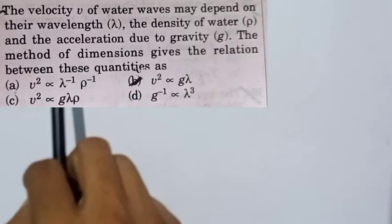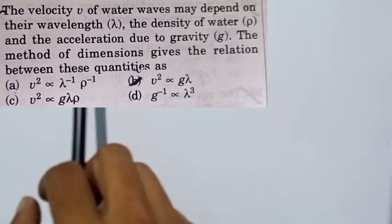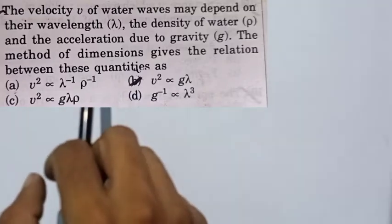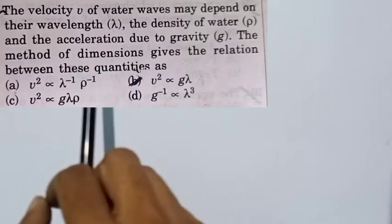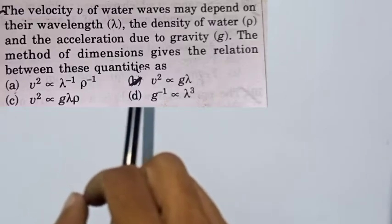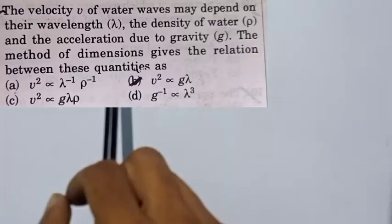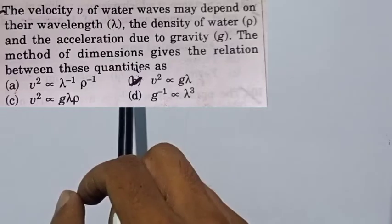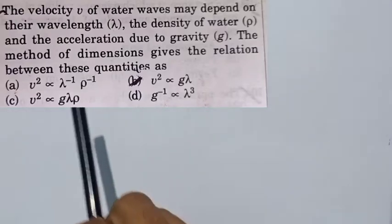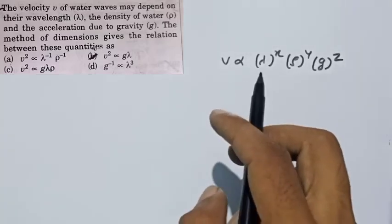The question is: the velocity v of water waves may depend on their wavelength lambda, the density of water rho, and the acceleration due to gravity g. Using the method of dimensions, we have to find the relation between these quantities — that is, velocity depends on lambda, density, and g.